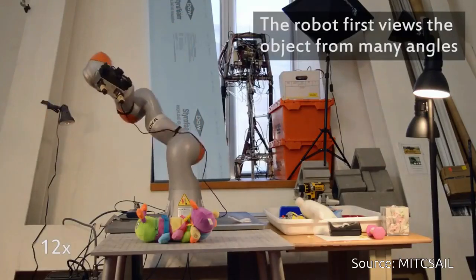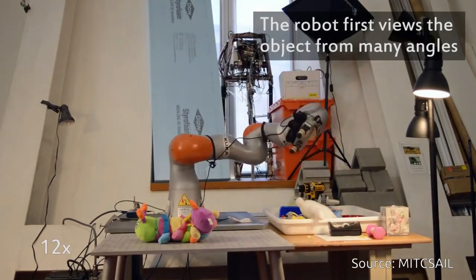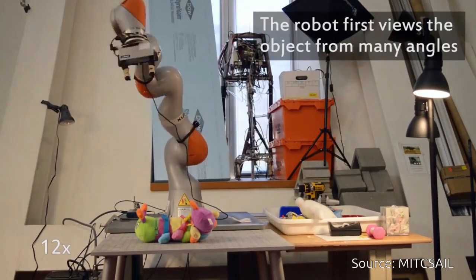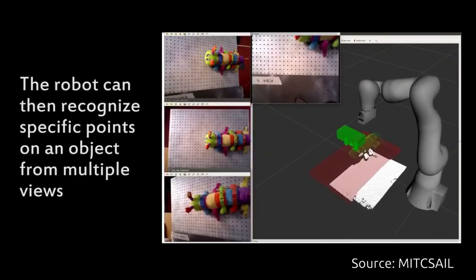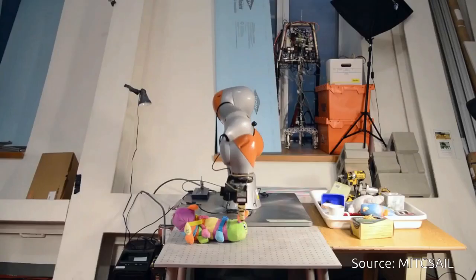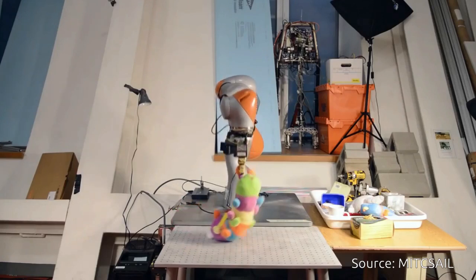The system, dubbed Dense Object Nets (DON), looks at objects as collections of points that serve as visual roadmaps. This approach lets robots better understand and manipulate items.